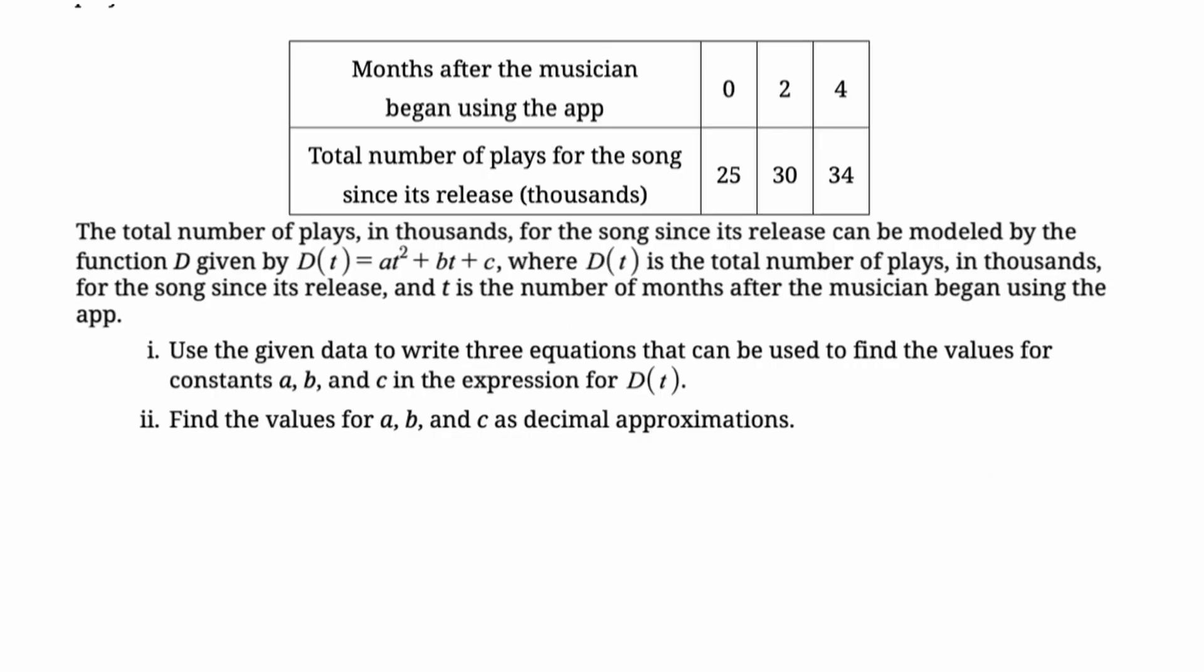So first question is basically always going to be the same. You're going to write a system of equations, then you're going to solve the system of equations. So the first thing I'm going to do, we know that if we do D of zero, we should get 25, D of two, we should get 30, and D of four, we should get 34. But I kind of think they want you to write them out. So I'm going to do that. I'm going to show plugging in zero to get this equation.